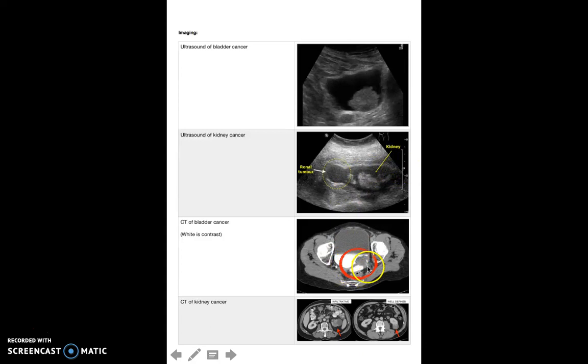You can understand that here, this is a tumor if you know what the bladder normally looks like on CT. The white stuff is just contrast that's been put in, and the urine sits on top of the contrast.